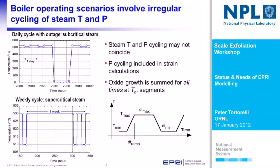The boiler operating scenarios the model can take into account involve irregular cycling of steam pressure and temperature. An example is a daily cycle with a shutdown and an outage under supercritical steam conditions, where small changes represent transitions between partial and full loading. Another cycle we've looked at is on the supercritical steam side with a weekly cycle. Steam temperature and pressure cycling may not coincide — we have to take that into account. Pressure cycling is included in the strain calculations, and we sum oxide growth over all times during these different temperature events and different ramp times.